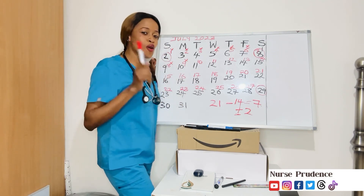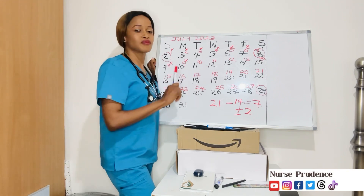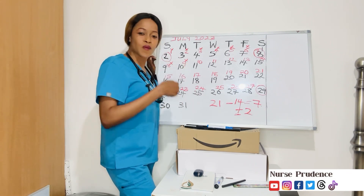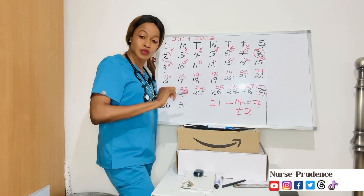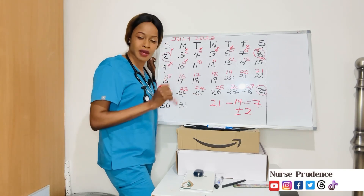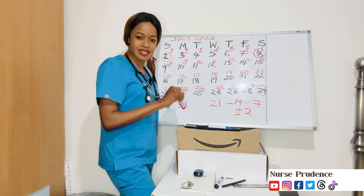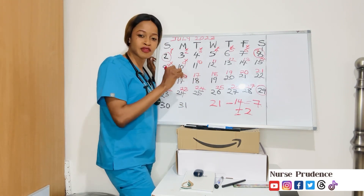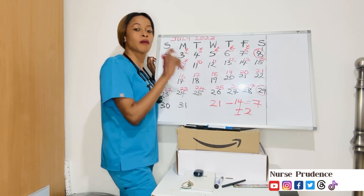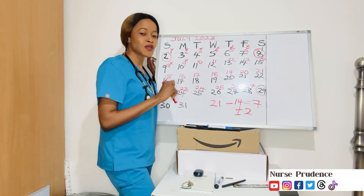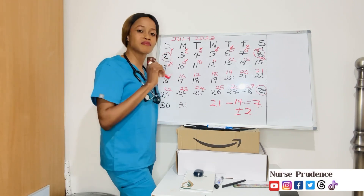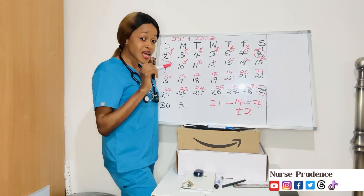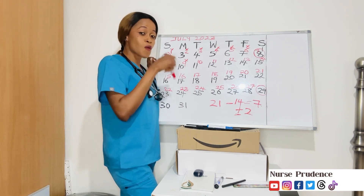I will repeat again: know your average cycle length before calculating your ovulation — it's very important. You can pause the video, rewind, watch it again, get a paper and pen and do the calculation yourself. Whatever your menstrual cycle length is, the formula is the same. The fact that someone is menstruating does not mean she cannot get pregnant, depending on her cycle. People with a 21-day average cycle usually ovulate while they are still menstruating.